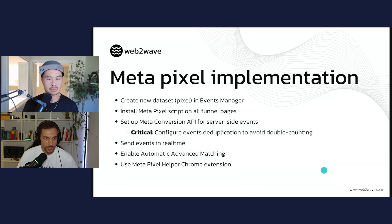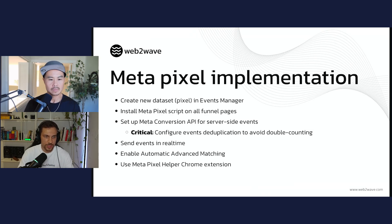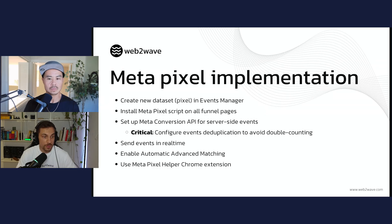The recommendation is to create a dataset (formerly called Pixel) in Events Manager. Install the script on all pages, get an access token for server events — the Conversion API is relatively simple to implement in any programming language. However, you must implement deduplication. If you send the same Purchase event from both browser and server without proper setup, Facebook will treat them as two separate events, causing your campaigns to incorrectly optimize by distributing budget based on double the actual events.